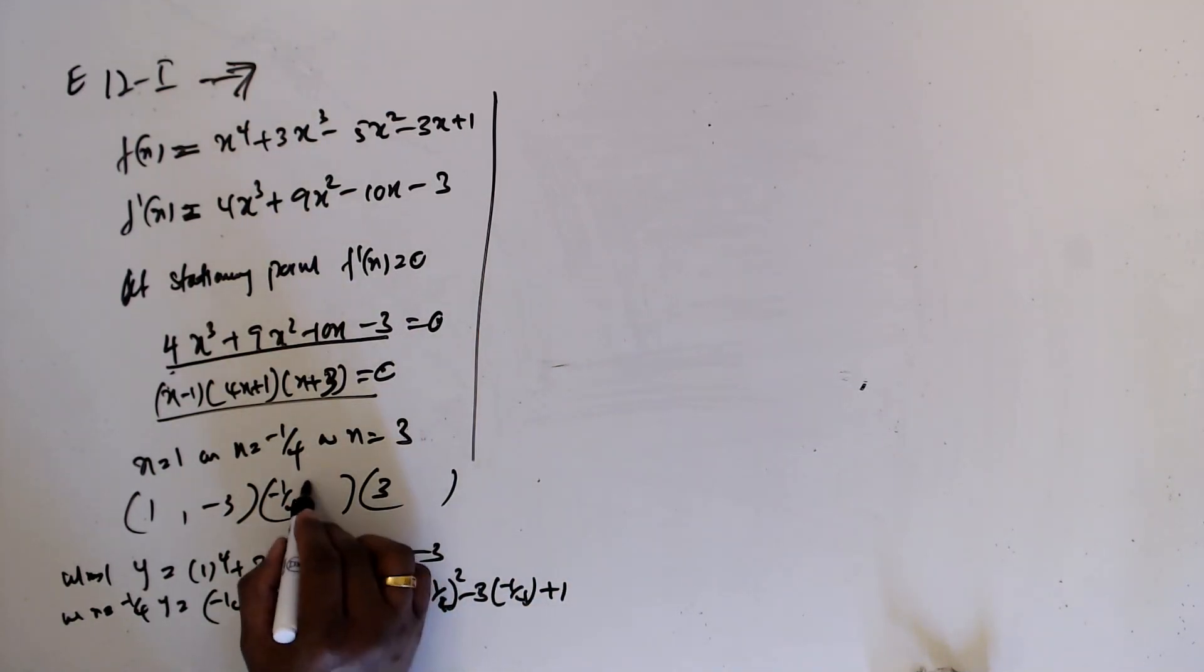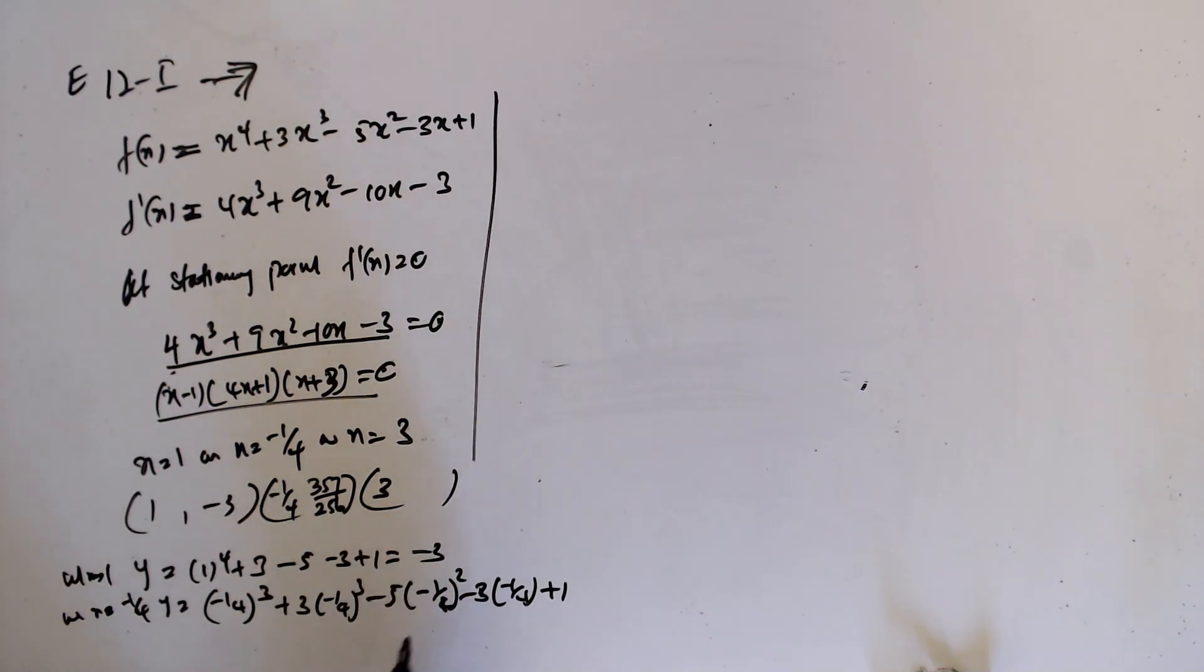357/256. Then x equal 3, y equal 3^4 plus 3(3)^3 minus 5(3)^2 minus 3 plus 1, this one will...